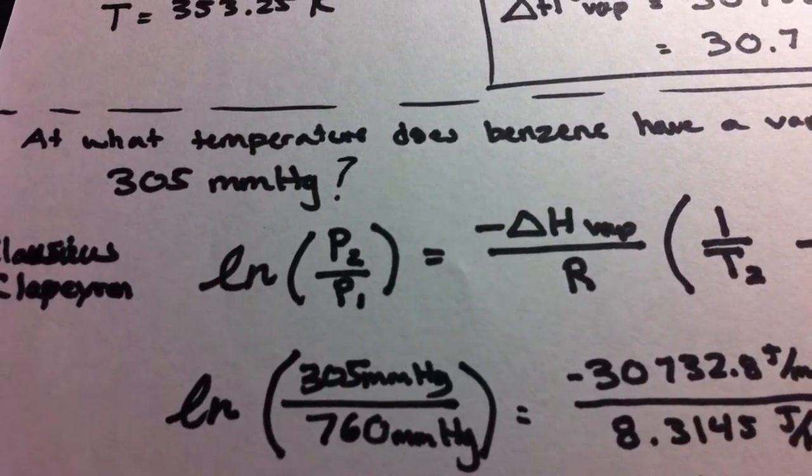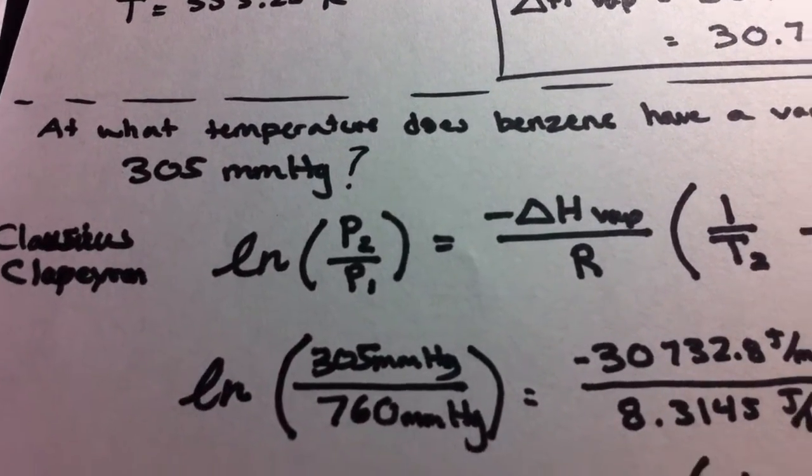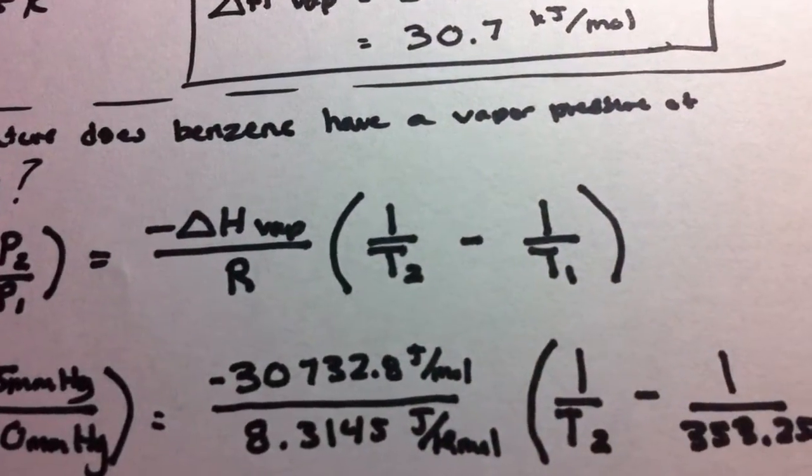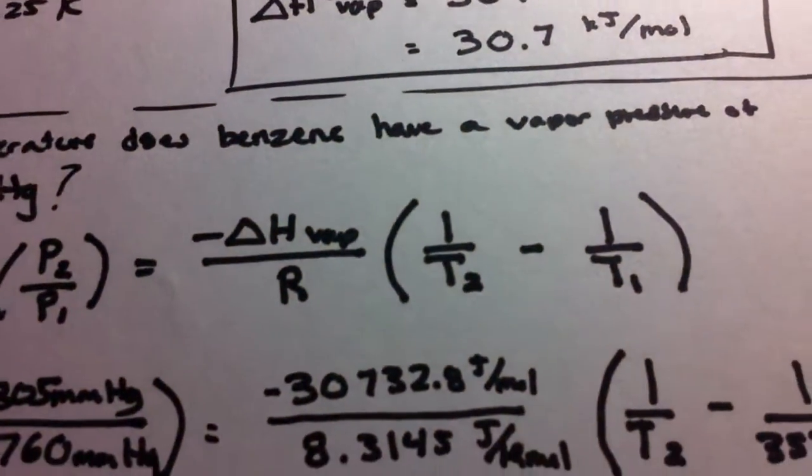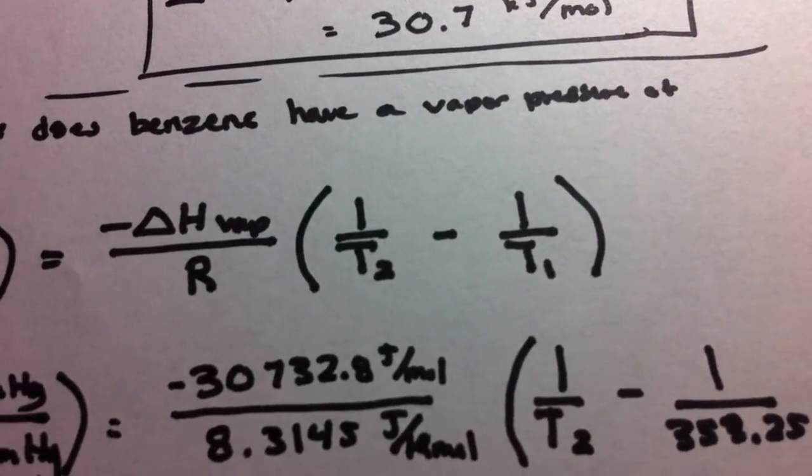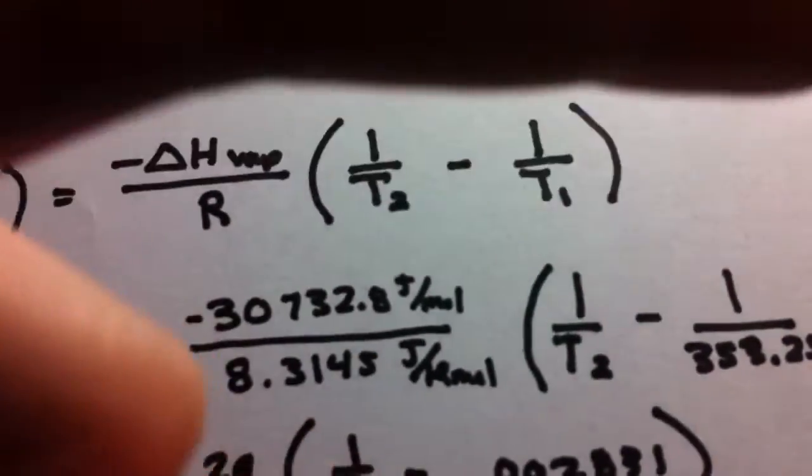Since that's approximately, well, that is one atmospheric pressure. Delta H is going to be what we calculated earlier, and that's going to be in joules per mole, in this case, because of the unit cancellation.